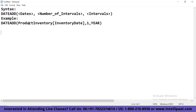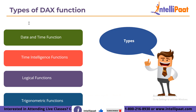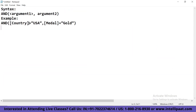Now let's move forward and discuss the next function, which is logical functions. Logical functions are used to perform logical operations and return them as either true or false. For example, the DAX AND function checks if both arguments are true or false — it will return true if and only if both arguments are true, otherwise it will return false. The syntax is: AND(argument1, argument2). For example: AND(country = "USA", medal = "gold"). If both conditions are met, it will return true, otherwise it will return false.